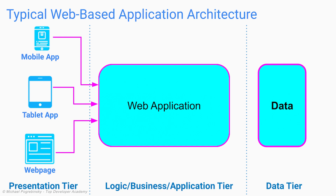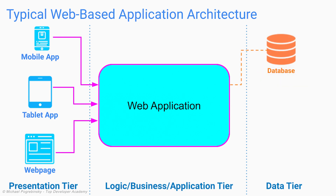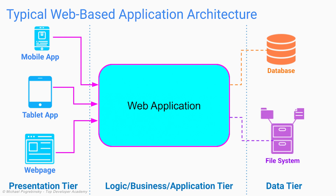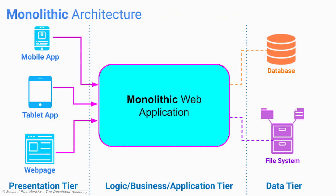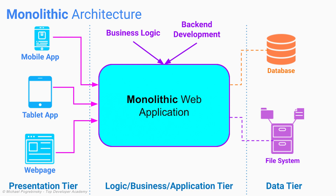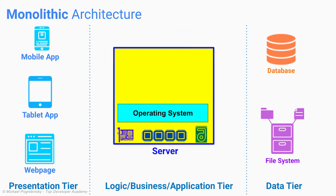Finally, we have the data tier. In this part of our system, we store all the necessary information about our customers or business in persistent storage. This typically includes a database, but in some cases can also involve storing files on the file system directly. This three-tier architecture is also commonly called the monolithic architecture, because all the business logic and the backend development are concentrated inside a single codebase, and it's also deployed at runtime as a single monolithic process.